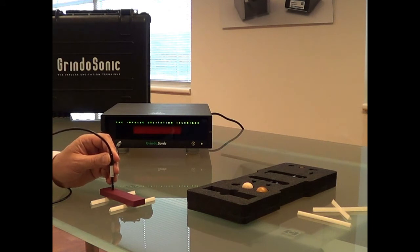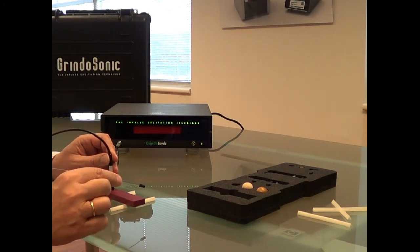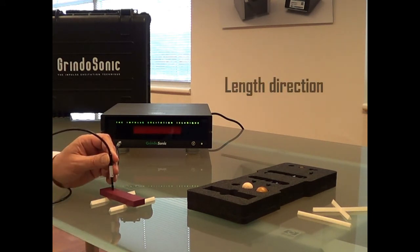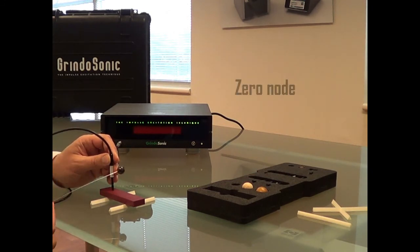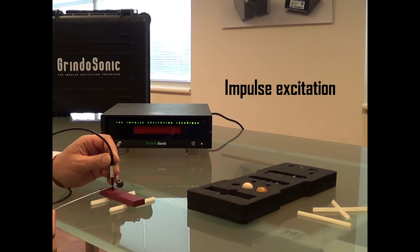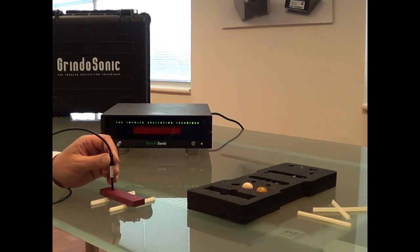We put the probe with a little dot in the direction of the length of the bar and we put it in the zero node. And then the technique is called impulse excitation. We excite the bar with a small impulse and we immediately get the measurement result on the screen.